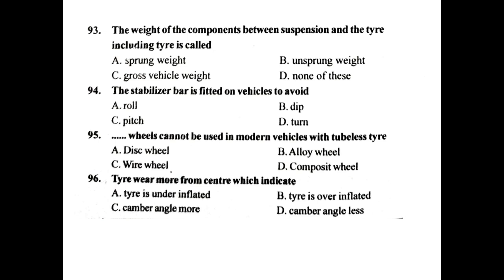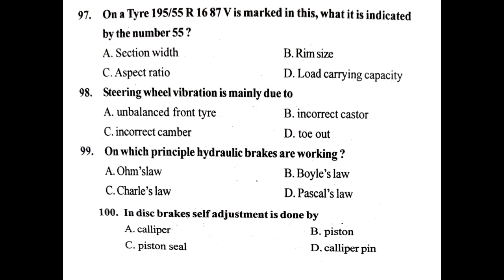The weight of components between the suspension and the tire, including the tire, is called unsprung weight. The stabilizer bar is fitted on vehicles to avoid body roll. Dash wheels cannot be used in modern vehicles with tubeless tires — it is wire wheels. Tire wear from the center indicates the tire is over-inflated. The number 55 on a tire indicates the aspect ratio.